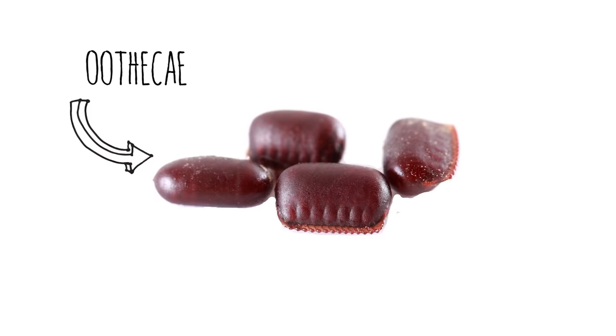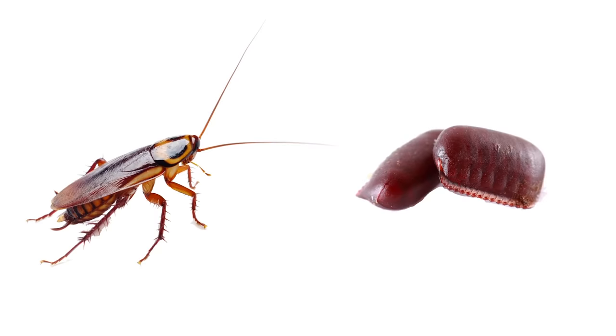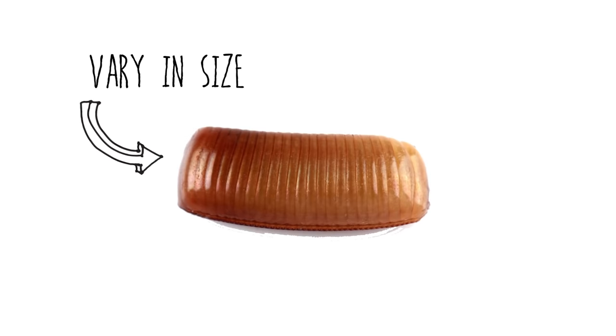Roaches will also lay egg cases called oothecae. This is a sign that an infestation is present. Some species of roaches will drop these egg cases in the same areas that you have previously checked. These cylindrical egg cases can vary in size from about 5mm to 10mm and are tan to dark brown.